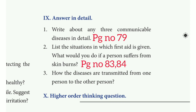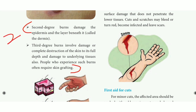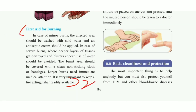2nd question: List the situations in which first aid is given. What will a person suffer from skin burns? Take page number 83, under the heading 'First aid' — mark the first paragraph and first point. Then mark 2 points from first aid for bites/stings, followed by 3 points below. Then mark the paragraph under 'First aid for burns' — mark 3 points from that section. That covers the full answer to this question.